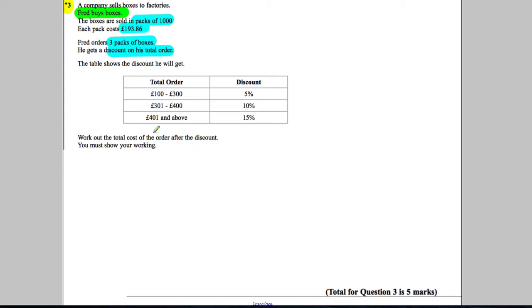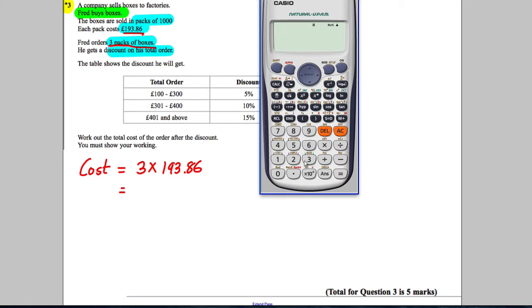So he wants to buy three packs of boxes. Each pack costs £193.86, so his cost is clearly three multiplied by £193.86. Thankfully this is a calculator paper, so calculator out: three multiplied by £193.86 gives you £581.58.